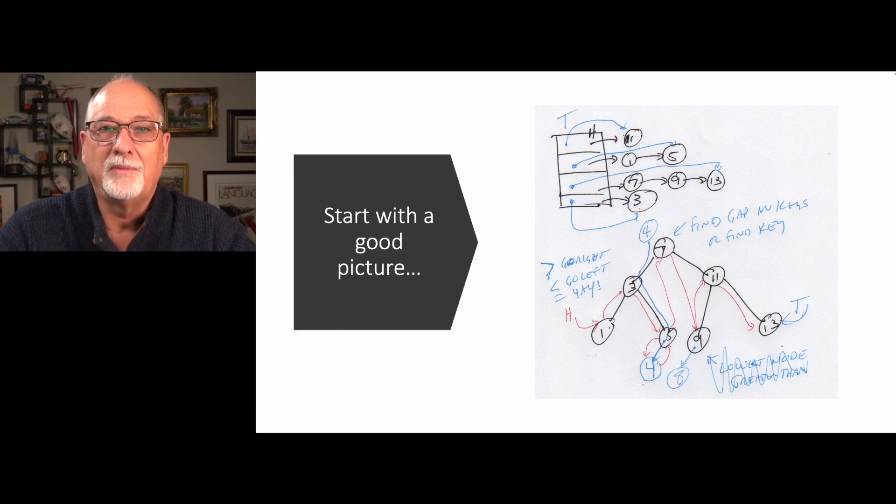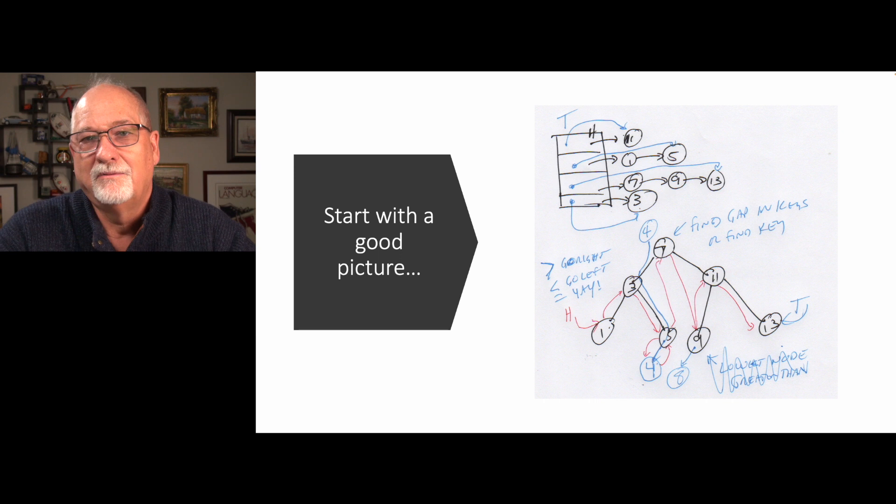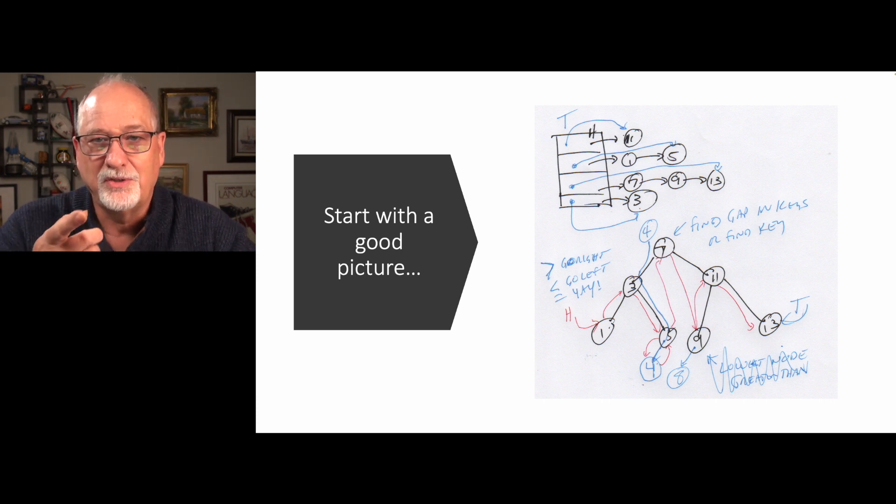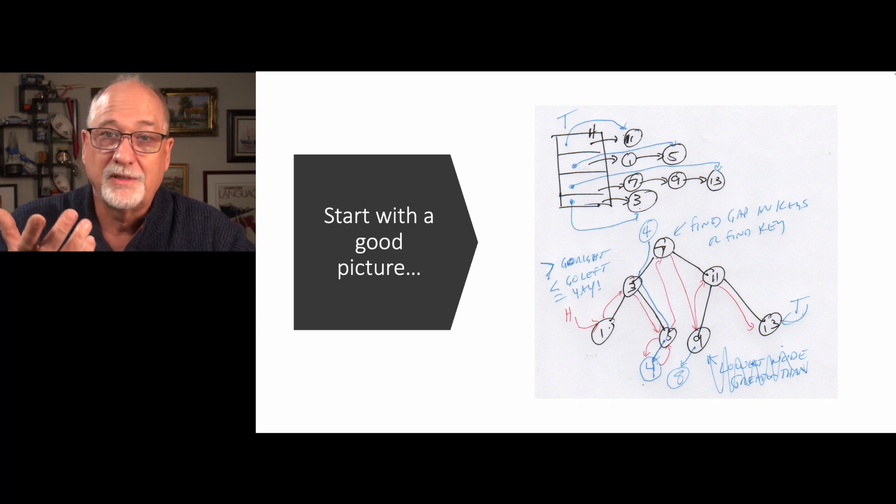So I kind of constructed this tree that was right. It was in order. And then I was trying to figure out where I might put 4, and where I might put 8, and where I might put 14, and then I kind of had this notion when I was writing the picture that I had the words lowest node greater than, and then I crossed them all out because that wasn't enough.